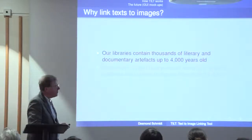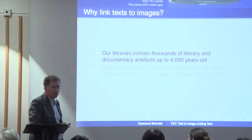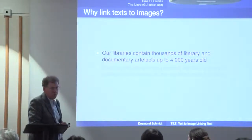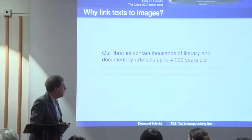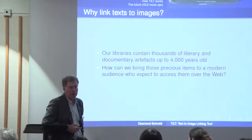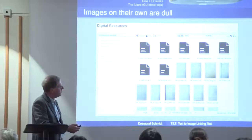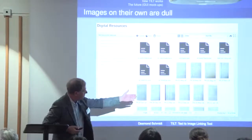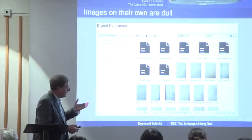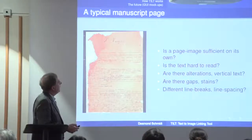The main reason is that our libraries are full of thousands of literary and documentary artifacts — not just books, but also manuscripts, records of lawsuits, documents from the historical archives, etc. The question is how can we bring these precious items to a modern audience who expects to search them and interact with them? If you put them in a repository, you store images with some metadata, the user can search very coarsely and is invited to click on a thumbnail and stare at a dull image.